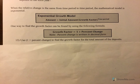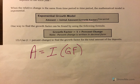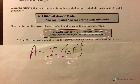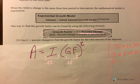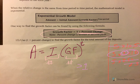Our exponential models — growth and decay — are pretty much the same formula; the only difference is the growth factor. The ending amount equals the initial amount times the growth factor raised to the time period. The growth factor must be greater than 1 for growth, because multiplying by 1 keeps you the same, multiplying by something bigger than 1 makes you grow, and multiplying by something less than 1 makes you shrink. We find the growth factor by taking 1 plus the percent change, since the 1 represents your initial amount and the percent change is how much you're growing.